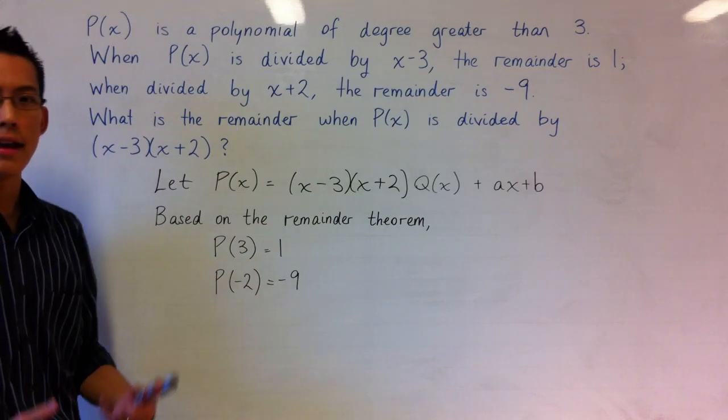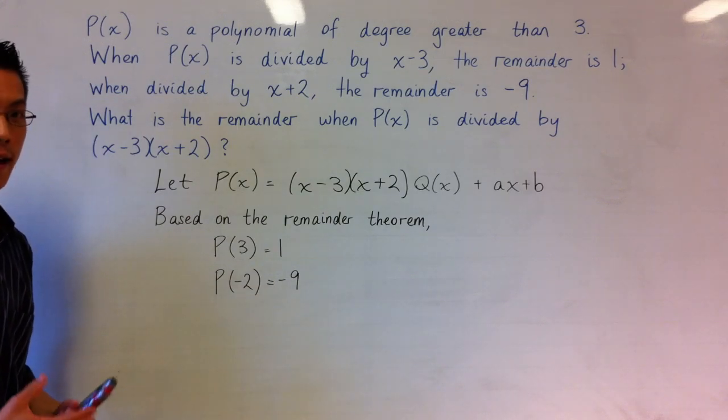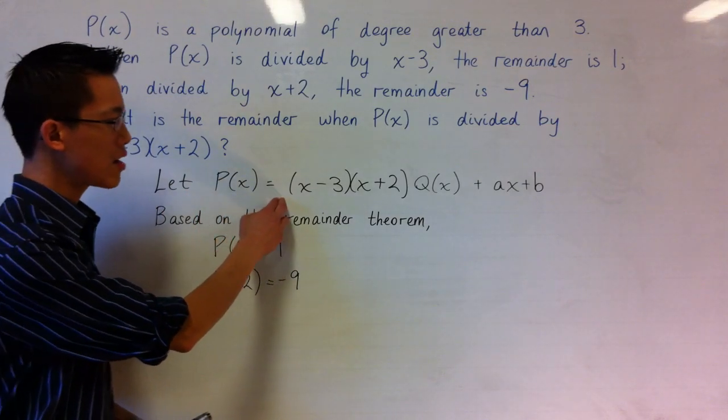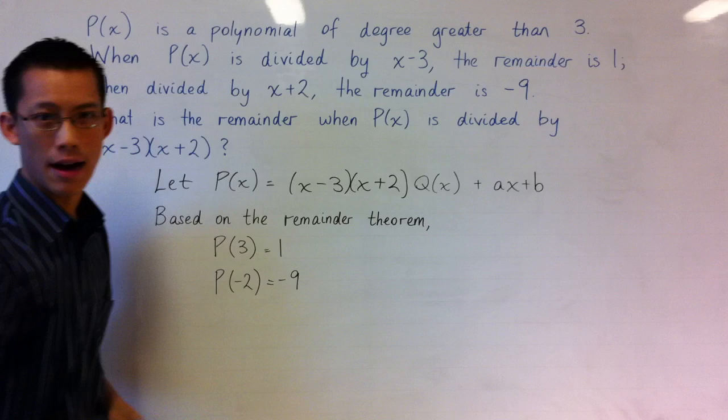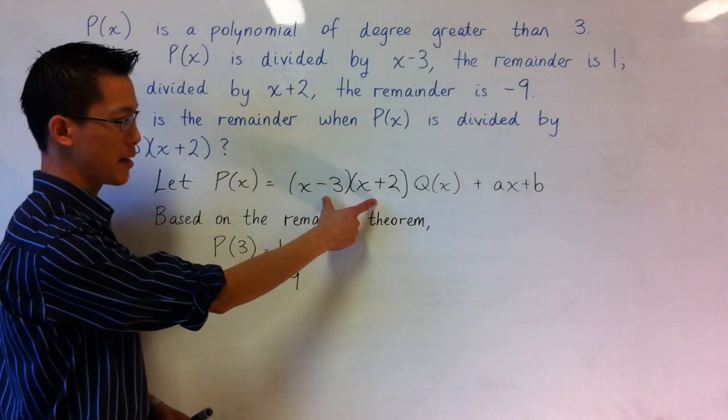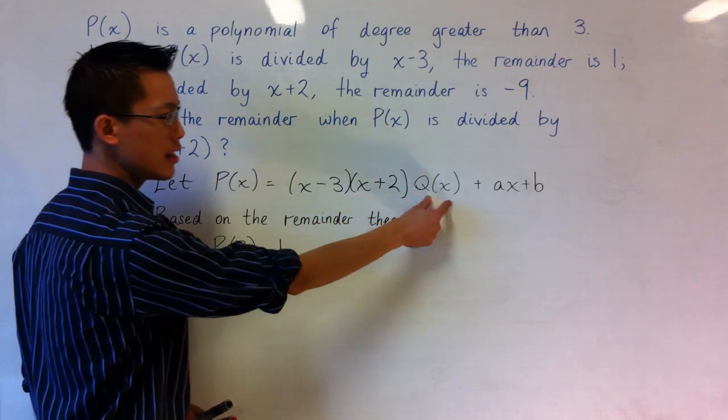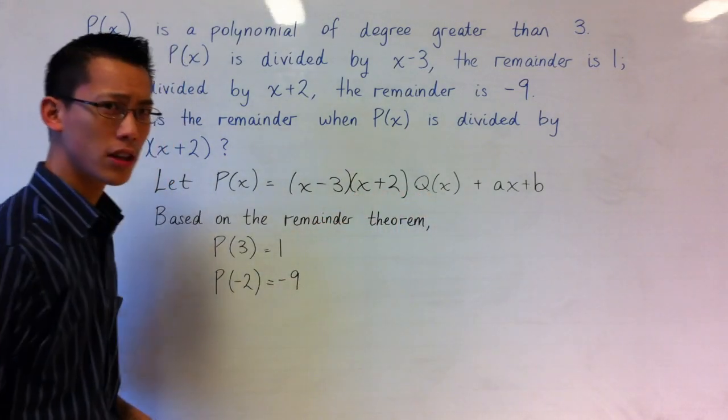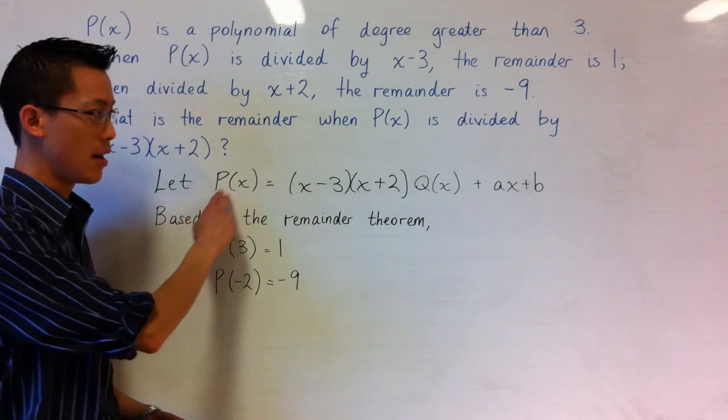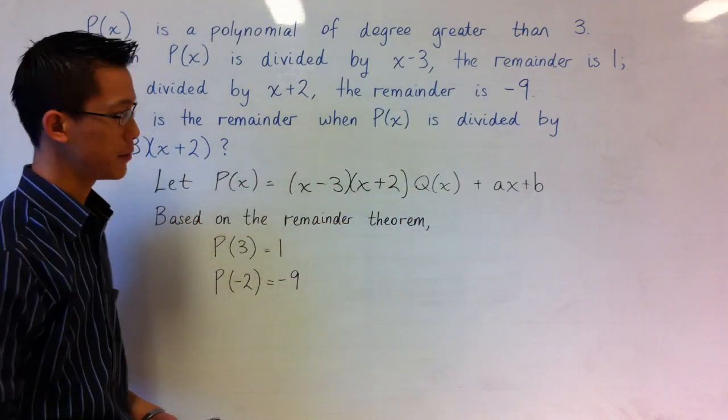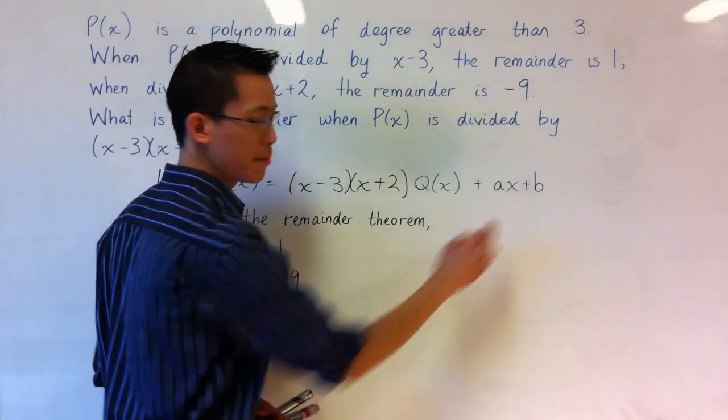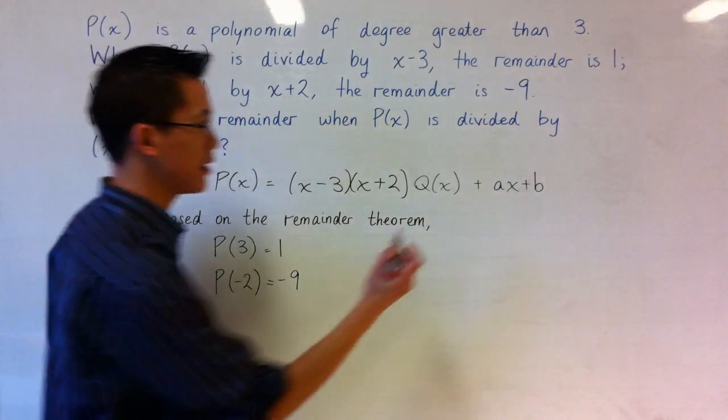Well my very first step, and in some ways this is the most confusing and arbitrary of the steps, is I'm going to let our polynomial P equal this expression. Now I've got it in this form because here is my divisor (x-3)(x+2) and here's my quotient function. Now I don't know what the quotient will be because actually P can be a whole variety of different polynomials depending on the value that Q takes. And then lastly I have ax plus b here on the end.